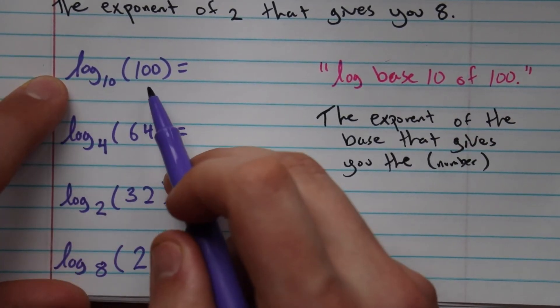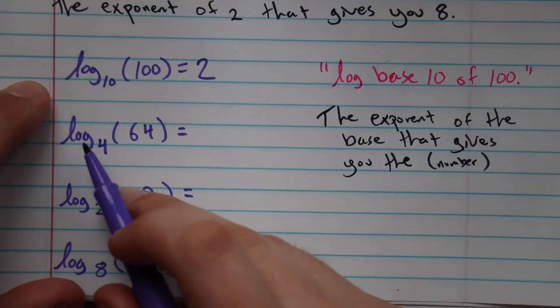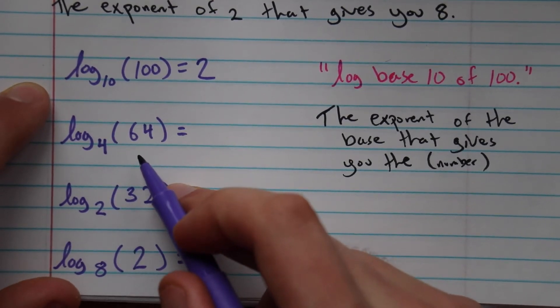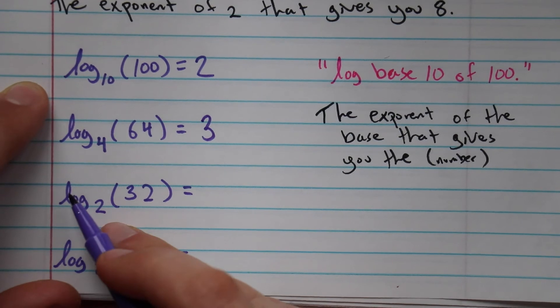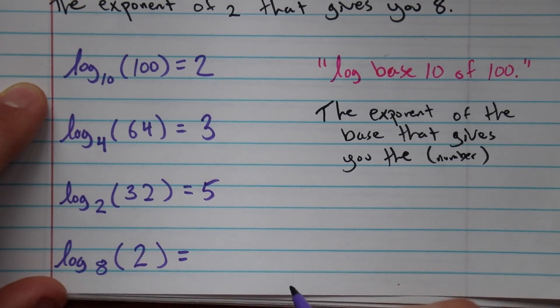And all it is is the exponent of the base that gives you the number. So log base 10 of 100 is the exponent of 10 that gives you 100, which is 2. Log base 4 of 64 is the exponent of 4 that gives you 64, which is 3. Log base 2 of 32 is the exponent of 2 that gives you 32, which is 5.